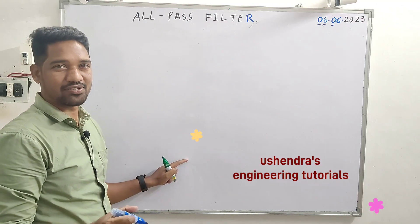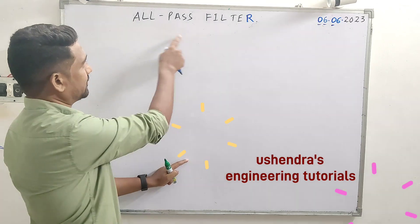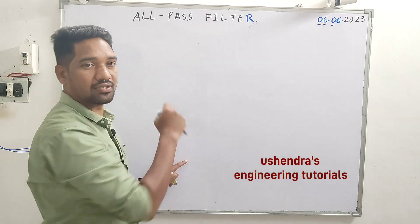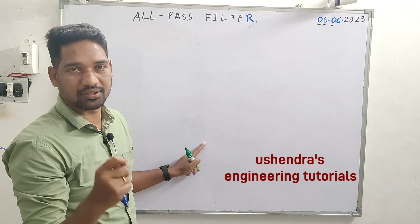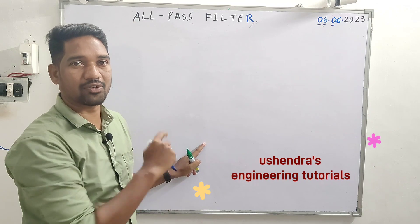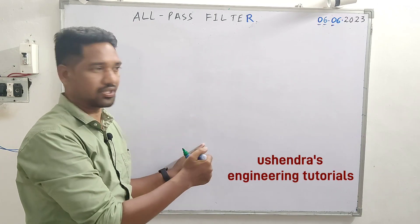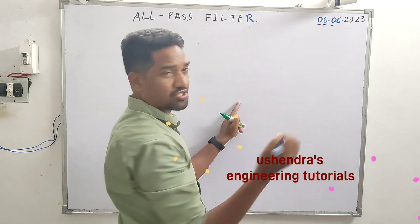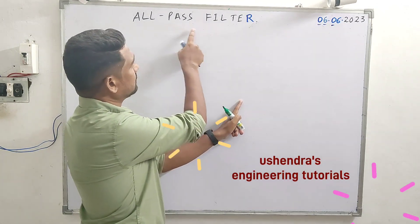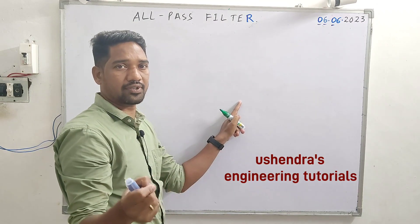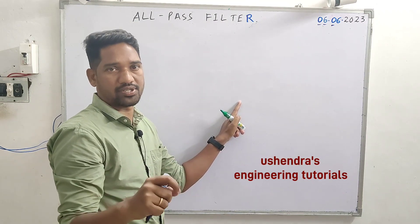In linear IC applications, slow filters are an important topic. Today we look at the all-pass filter and will prove that the magnitude of the transfer function of an all-pass filter is unity. An all-pass filter is a combination of inverting mode and non-inverting mode of an operational amplifier.